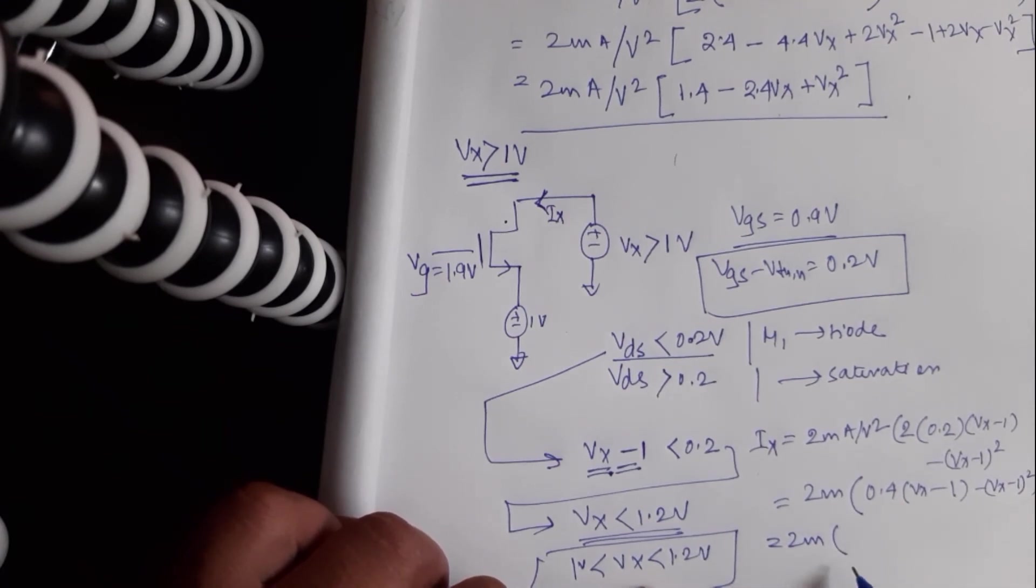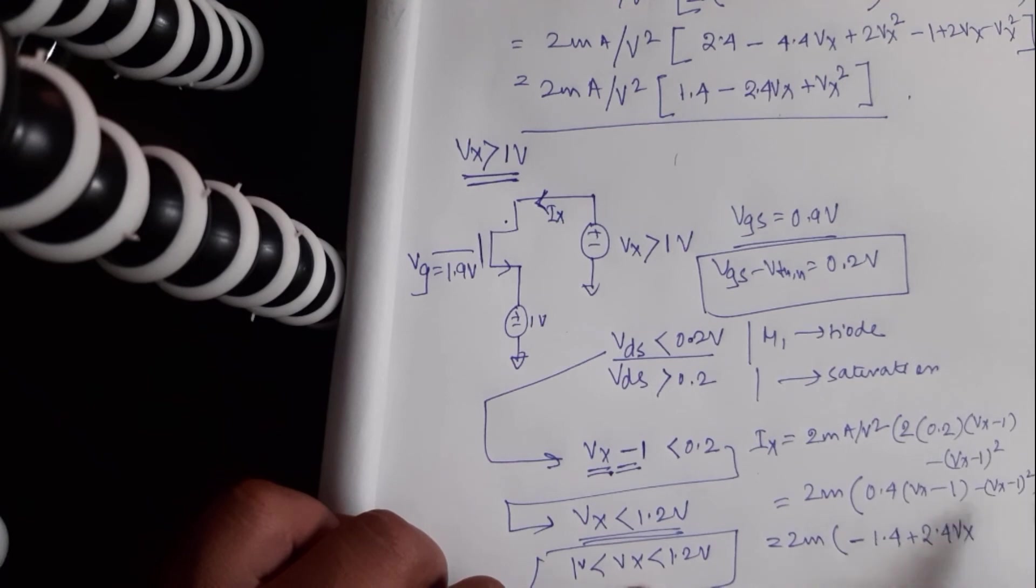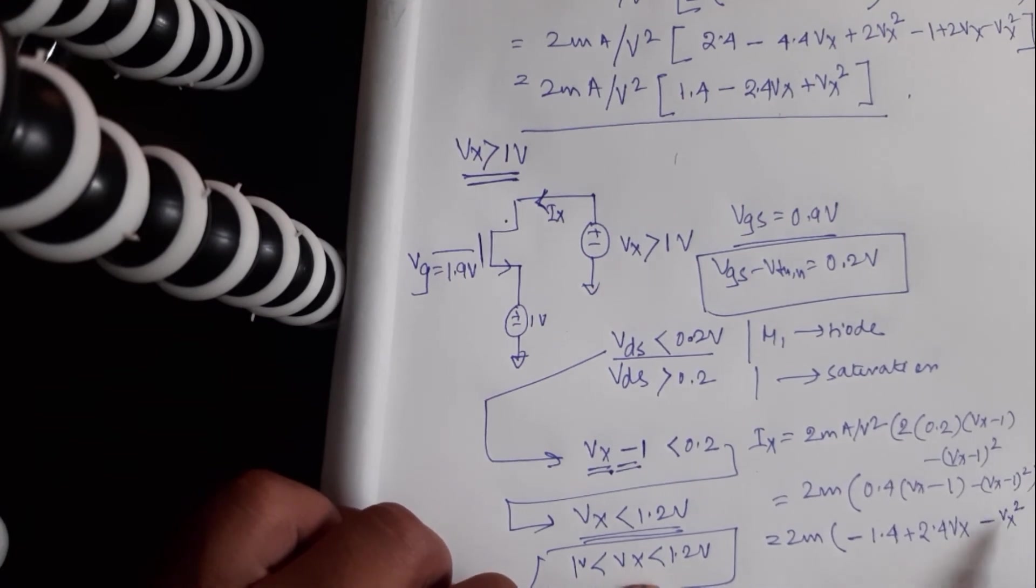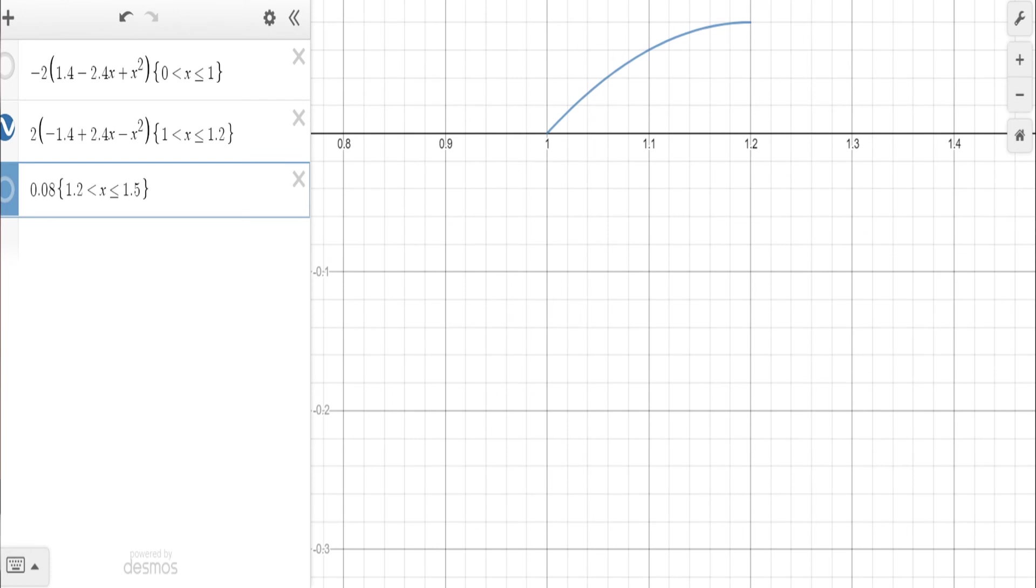Let me just quickly simplify this. Minus 0.4, minus 1, minus 1.4, 0.4 Vx plus 2, 0.4 Vx plus 2. Minus Vx square, minus Vx square. This is how the current looks.